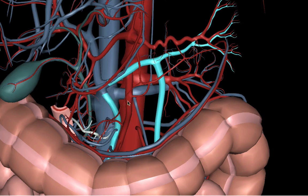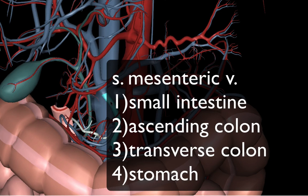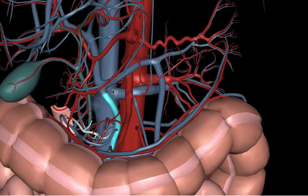The superior mesenteric vein receives blood from the entire small intestine, the ascending colon, the transverse colon, and the stomach, which we've just removed. These all come together to join into the splenic vein along with the inferior mesenteric vein.